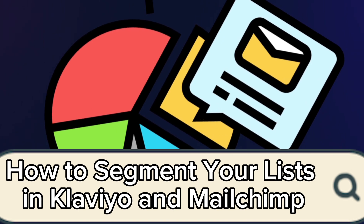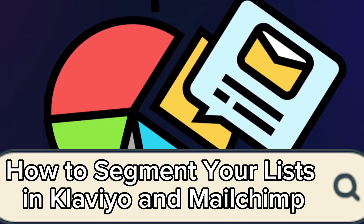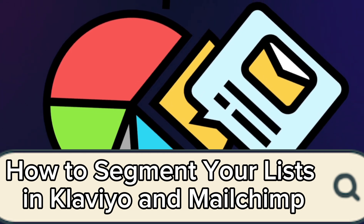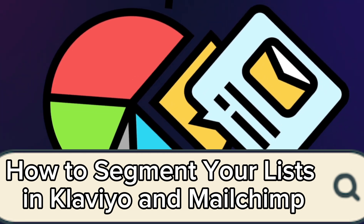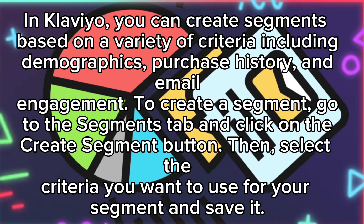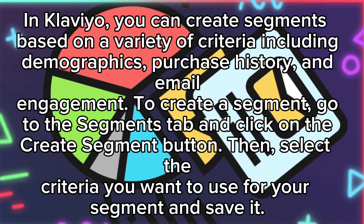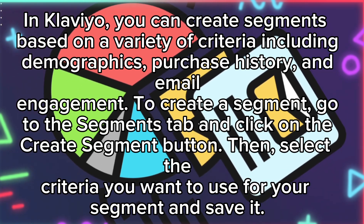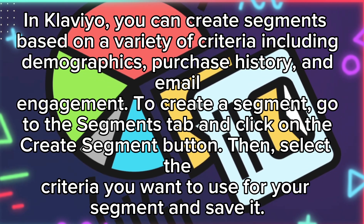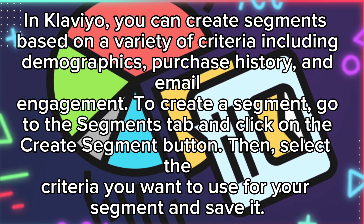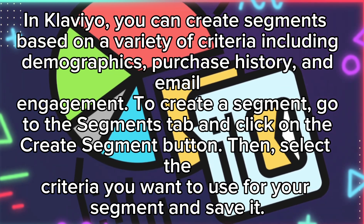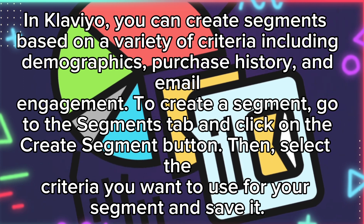How to segment your lists in Klaviyo and MailChimp. In Klaviyo, you can create segments based on a variety of criteria including demographics, purchase history, and email engagement. To create a segment, go to the Segments tab and click on the Create Segment button, then select the criteria you want to use for your segment and save it.